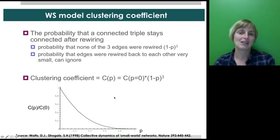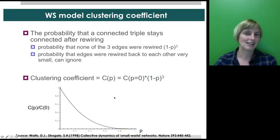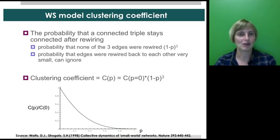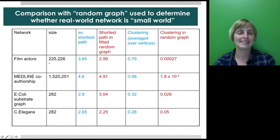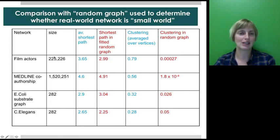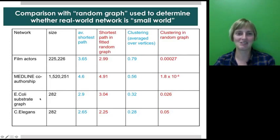The clustering coefficient for a given rewiring probability is just a drop from the original lattice clustering coefficient times (1−p)³. This is what the function looks like on linear rather than logarithmic axes. But there isn't really such an analytical derivation for average shortest paths. We can look at a bunch of different networks — film actors, co-authorship networks, the substrate graph in E. coli, and the C. elegans neural network — and see how their empirical properties match up with what we expect of a small world network.